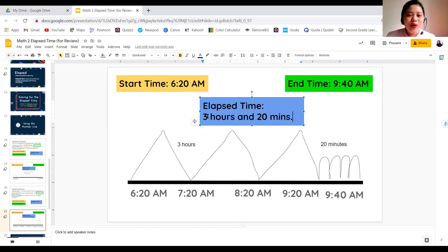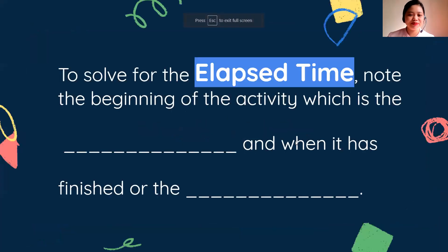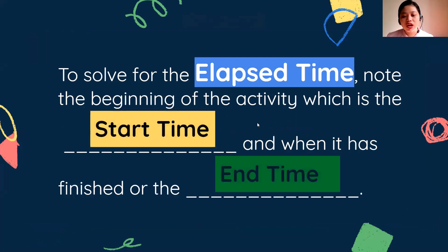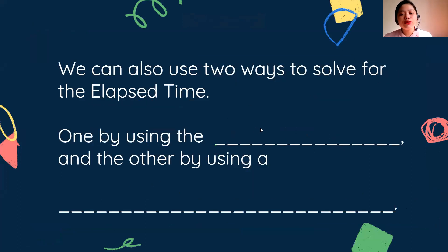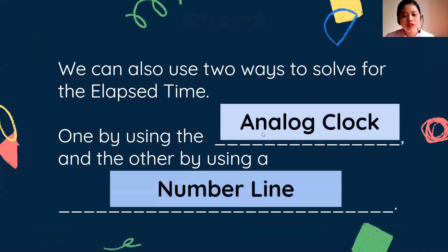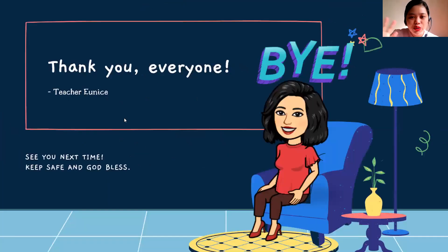So now we're done with our two situations — solving for elapsed time in minutes and in hours. Let's recap: to solve for elapsed time, note the beginning of the activity, which is the start time, and when it has finished, the end time. We can solve it using the analog clock or by using the number line, which we just did. Thank you for joining me in this review. If something's not quite clear, you can talk to me or send me a private message. Thank you and see you again, bye!